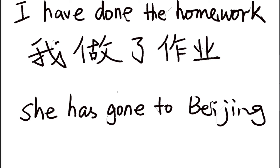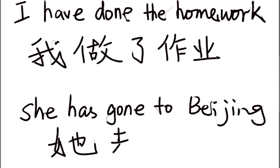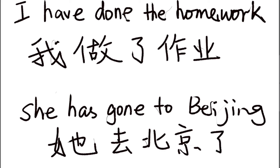Another example: 'She has gone to Beijing' — 她去北京了. 去 means to go, 北京 means Beijing, and 了 makes it a past complete sentence.